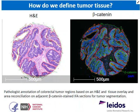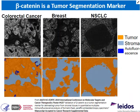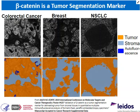We found that we could use beta-catenin as a tumor marker. With this tumor marker, we can do semi-automated segmentation of tumors in our Definiens program. Shown here are monochrome images from biopsies in our tumor microarray — examples from colorectal cancer, breast, and non-small cell lung cancer. The white is staining for beta-catenin. At the bottom you have a mask that Definiens applies based on where the beta-catenin staining is. We can apply this mask to the entire biopsy and categorize the tissue as either tumor or stroma.